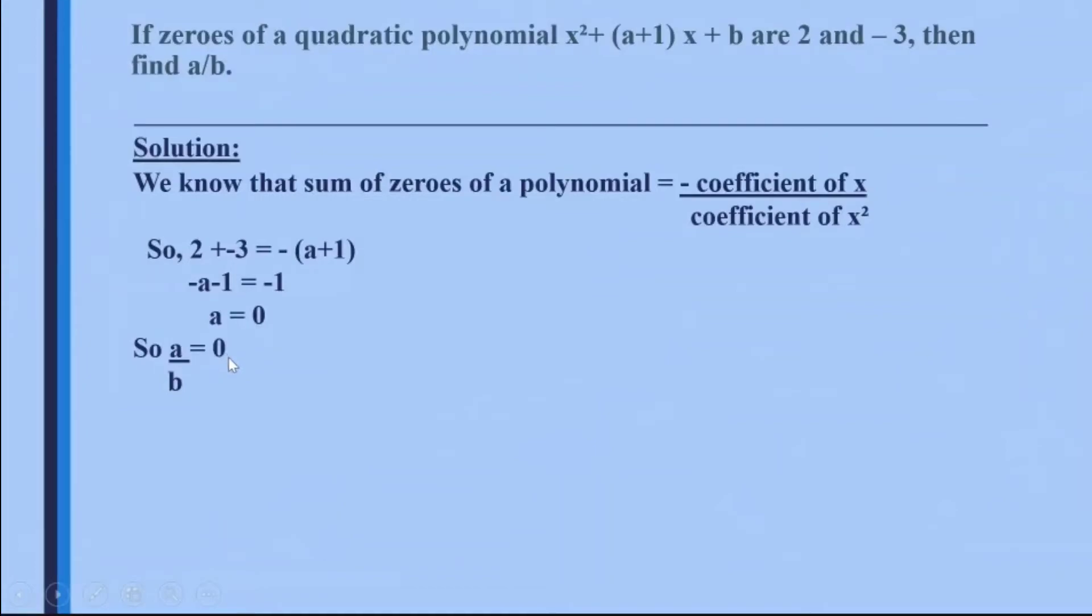But at times you can be asked to find out the value for b also. So in case you want to find out the value of b, I will use that the product of the zeros is equal to the constant term upon coefficient of x².